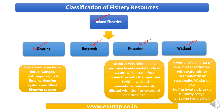Under riverine systems, there are five important systems in India: the Indus, Ganges, Brahmaputra, east-flowing, and west-flowing riverine systems. For this lecture, you are not required to name every species — refer to the concept notes and note at least three to four major species present in each riverine system.